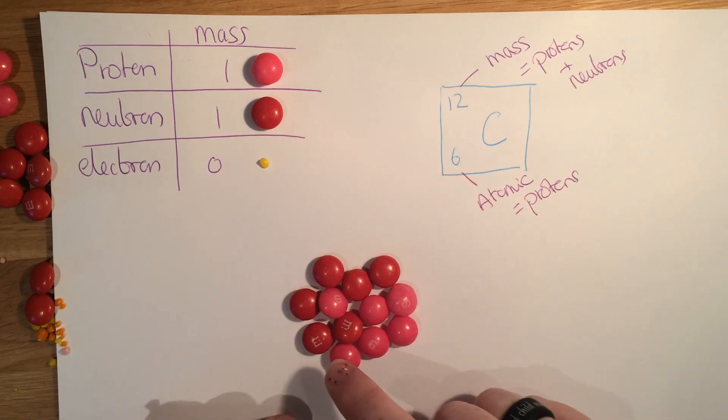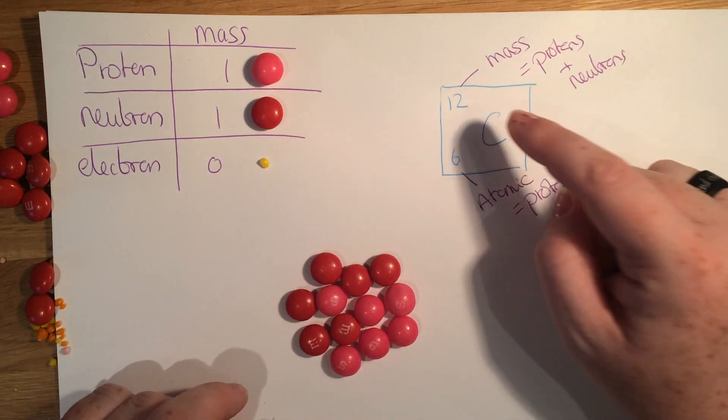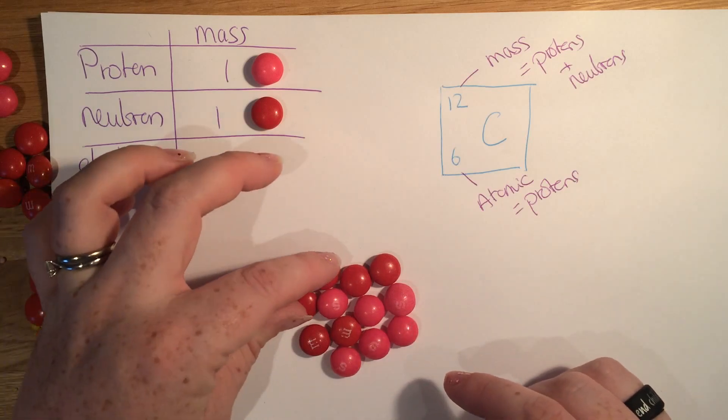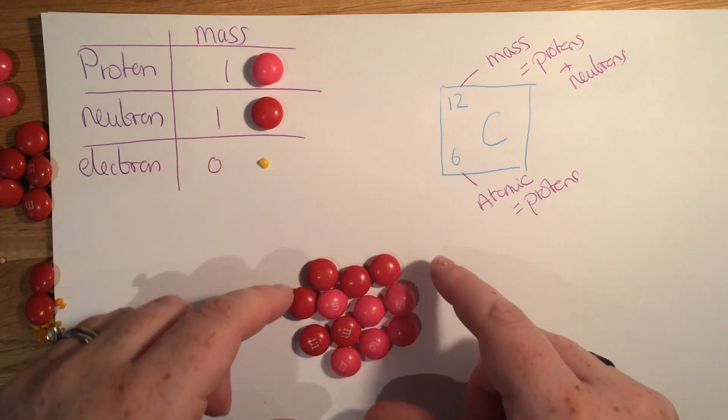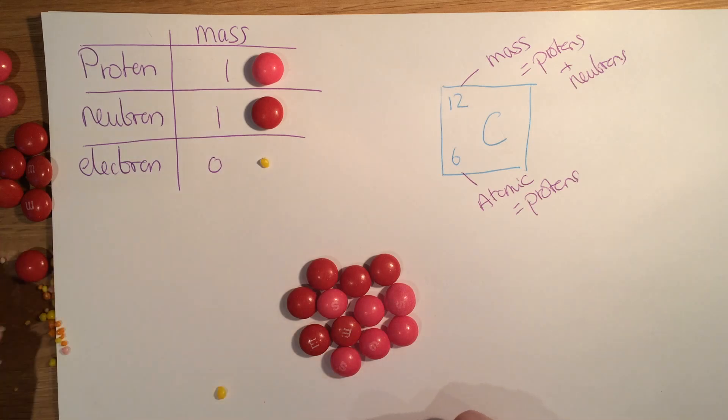It's got an atomic number of six. It's got one, two, three, four, five, six skittles in there. And it's got a mass of 12. So there are gonna be 12 heavy bits in the middle here. Now it has six electrons as well.